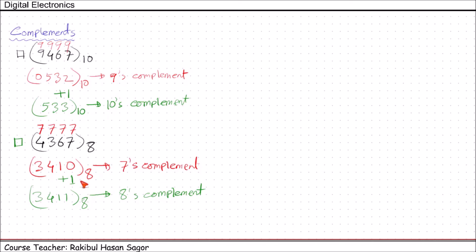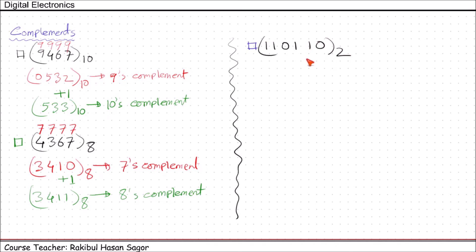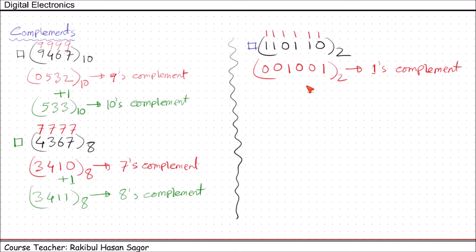You can do the same for hexadecimal and binary numbers as well. Let's see another example using a binary number. To find the 1's complement, subtract each digit from 1: 1 minus 1 equals 0, 1 minus 1 equals 0, 1 minus 0 equals 1, 1 minus 1 equals 0, 1 minus 1 equals 0, 1 minus 0 equals 1. This is the 1's complement. To get the 2's complement, add 1, which gives 1010.